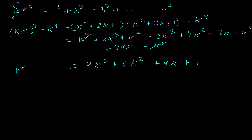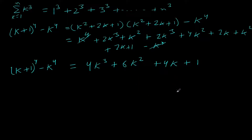You might have already guessed by now what we are going to do — we will simply substitute k from 1 to n. As you will see, this will give 1 cube plus 2 cube up to n cube, this will be 1 square into n square, this will be 1 plus 2 plus 3 up to n, and this will be n. We substitute k as 1, 2, 3, and so on up to n.